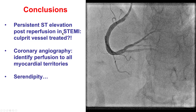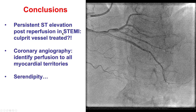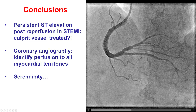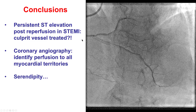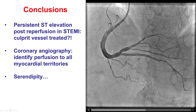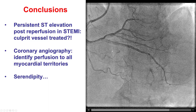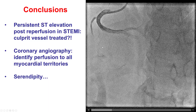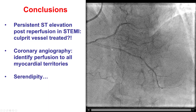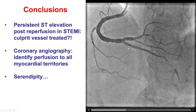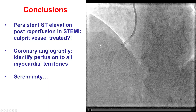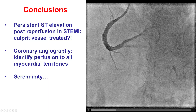In summary, this is a case in which we treated what we thought was the culprit vessel. However, the patient had continued ST-segment elevation, and the reason for that is that the culprit vessel was actually not the 90% lesion in the mid-right coronary, but it was an occlusion of the right posterior descending artery. There was a flush occlusion, and it was not immediately apparent on coronary angiography.